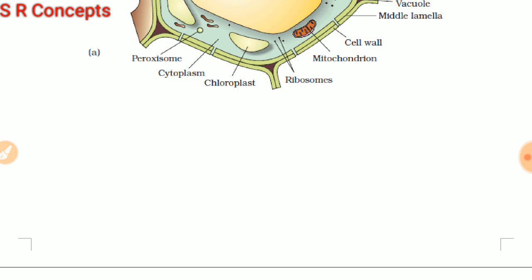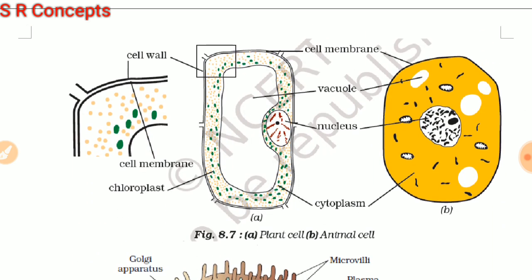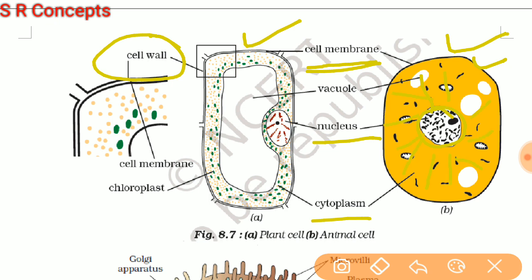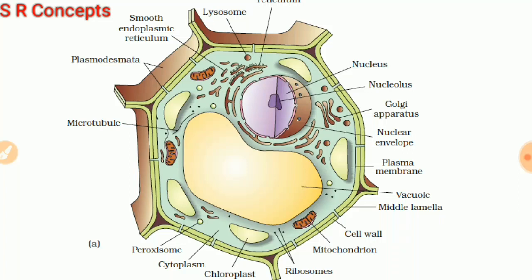Let us have a proper look at the structure of a cell. Here you can see an animal cell and a plant cell. The plant cell has a cell wall — a thick covering — but what is common is that both plant and animal cells have a cell membrane. In plant cell, the cell membrane lies inside the cell wall. Nucleus is present in both cells, and cytoplasm is also present in both cells. This all matrix between the plasma membrane and nucleus is called cytoplasm.